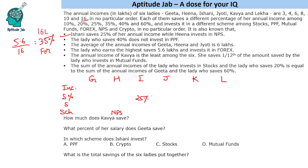Kavya's income is the least among the six, so her income is 3 lakhs. She saves 1/12th of the amount saved by the lady who invests in mutual funds. Now, the average annual income of Gita, Hina, and Jyoti is 6 lakhs, meaning their total is 18. The only combination from the given values that sums to 18 is 4, 6, and 8 — so Gita, Hina, and Jyoti have incomes of 4, 6, and 8 lakhs in some order.